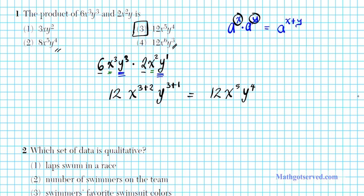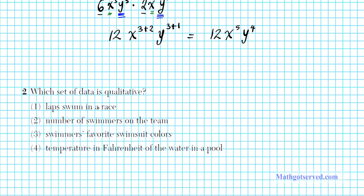Let's take a look at number two. Which set of data is qualitative? If you look at the word qualitative, you can extract quality. Qualitative data have verbal descriptions. There is another kind of data, quantitative, which is taken from quantity. Quantitative data are numerical descriptions.